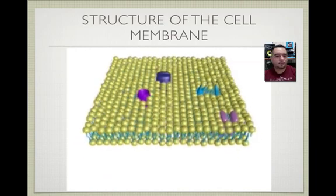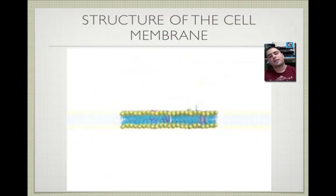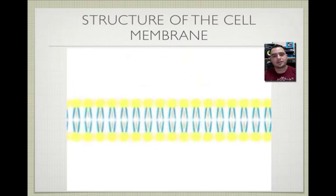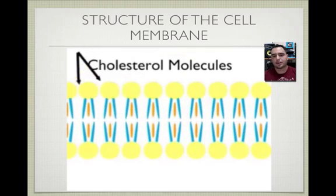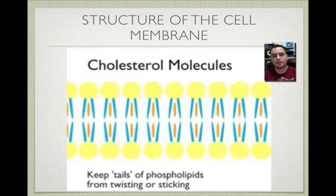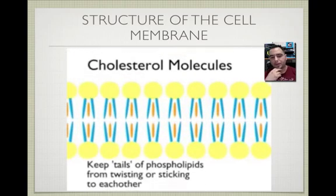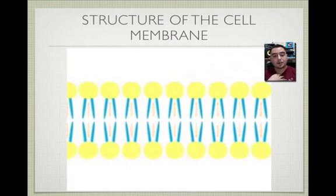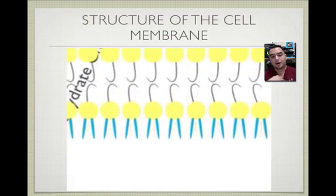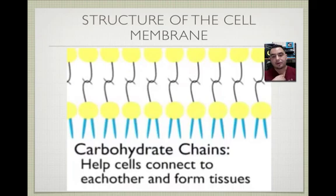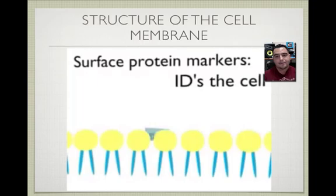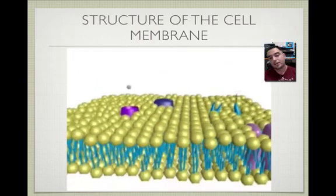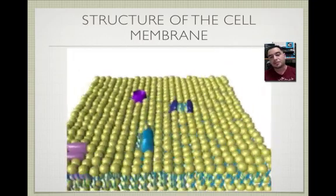The cell membrane is also called the fluid mosaic model because the proteins can move through it in a fluid-like way. Cholesterol molecules keep the membrane stable. Carbohydrate chains help cells connect to each other and form tissues. Surface protein markers act like ID tags for the cell so the immune system doesn't destroy it.